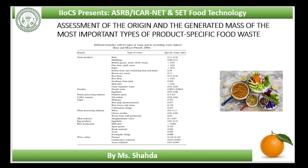Meat industry: the specific amounts of generated waste vary for each type of animal and the specific waste index ranges from 0.1 for sheep to 0.87 in the case of calf.